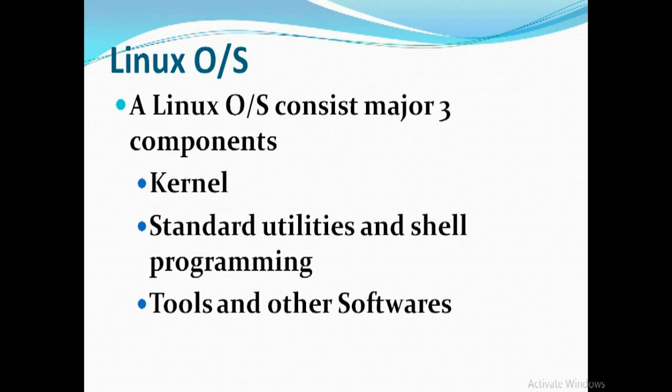The Linux operating system consists of three major components: the kernel, which is related to the operating system; standard utilities and shell programming; and various tools and other software provided along with Linux.